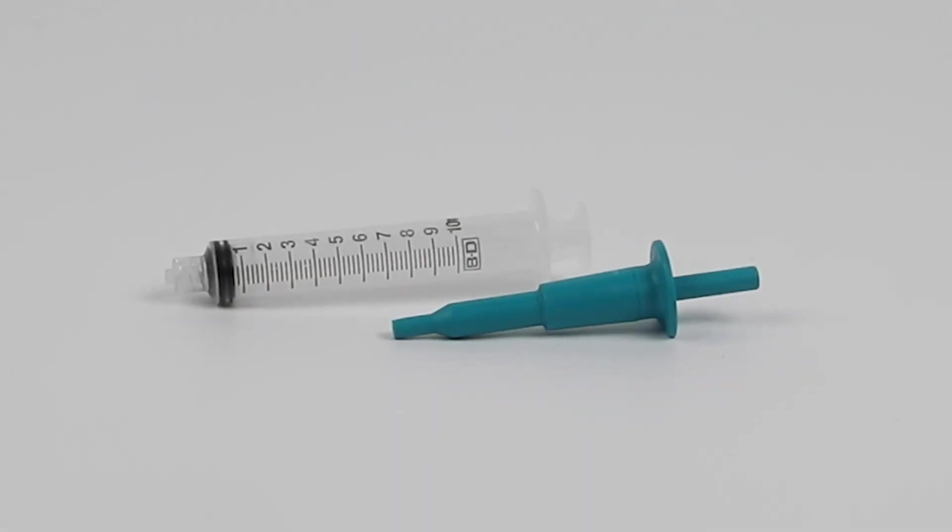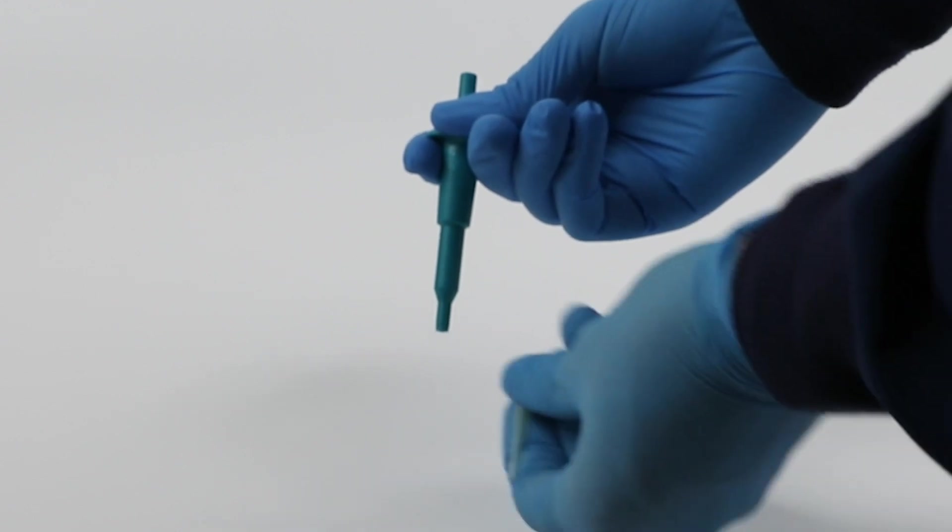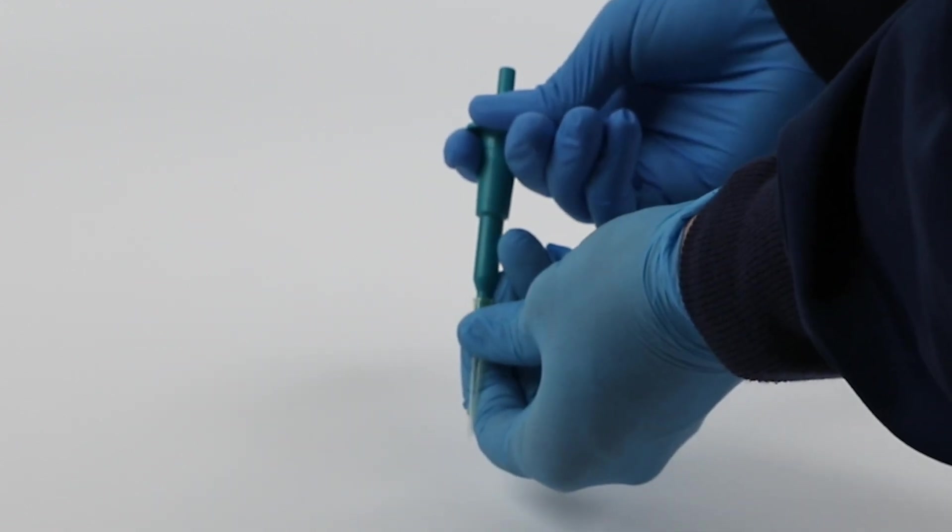A syringe or fixed-volume pipette called a mini-pet is used to measure an accurate aliquot of your sample. If using a mini-pet, first place a pipette tip on the end of the mini-pet.